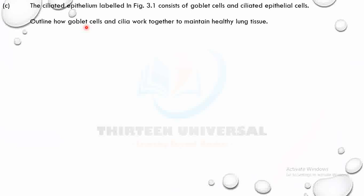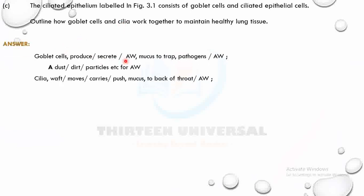Mucus also acts as a chemical barrier — it sometimes contains lysozyme that digests bacterial cell walls. Goblet cells secrete mucus, and the cilia sweep carpets of mucus from the airways towards the back of the throat. So: goblet cells produce mucus, mucus traps pathogens and dust particles, then cilia move or push the mucus to the back of the throat.